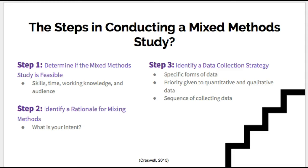Step 3 is to identify a data collection strategy. What are the specific forms of data? With your quantitative data, it could be attendance records; qualitative data could be pictures. What priority do you give to the quantitative data and the qualitative data? And finally, unless you are collecting data concurrently, what will be the sequence of your data collection?